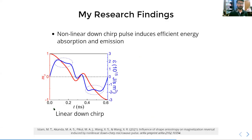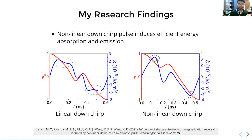Looking at the energy absorption profile: for linear downchirp, there is an almost constant section — inefficient energy absorption — followed by energy emission, and then absorption again which is not efficient. For non-linear downchirp, the profile is not flat but actually changing, and we can clearly see that the non-linear downchirp induces better stimulated energy absorption and emission.